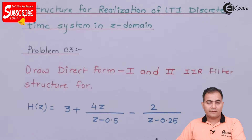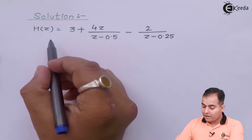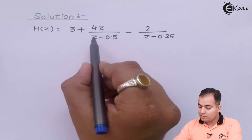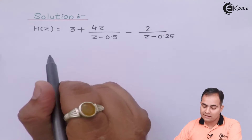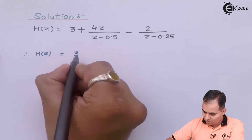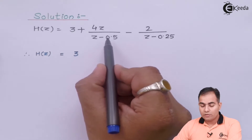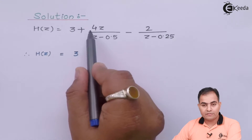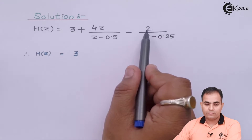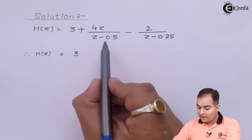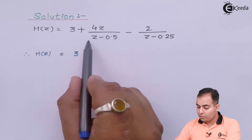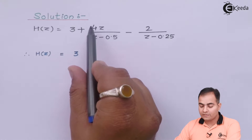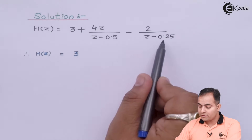We are going to cross multiply all the denominators with the numerator. H(Z) is 3 plus 4Z upon Z minus 0.5, minus 2 upon Z minus 0.25. I will cross multiply these two values and later multiply the whole denominator with 3. If we cross multiply the two denominators, then Z minus 0.25 multiplied with 4Z, and Z minus 0.5 multiplied with 2 go in the numerator, and both denominator parts multiply with each other. At the end, the product of Z minus 0.5 and Z minus 0.25 is multiplied with 3.